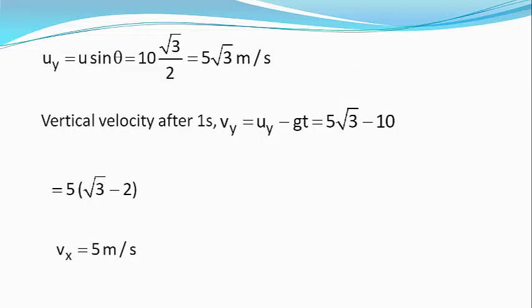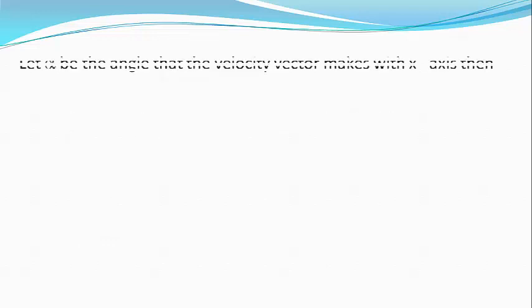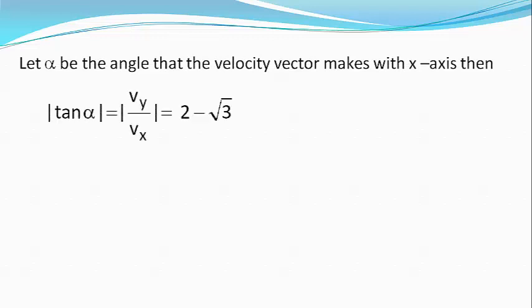Let alpha be the angle that the velocity vector makes with x-axis. Then modulus of tan alpha equals modulus of v_y divided by v_x which equals 2 minus root 3.